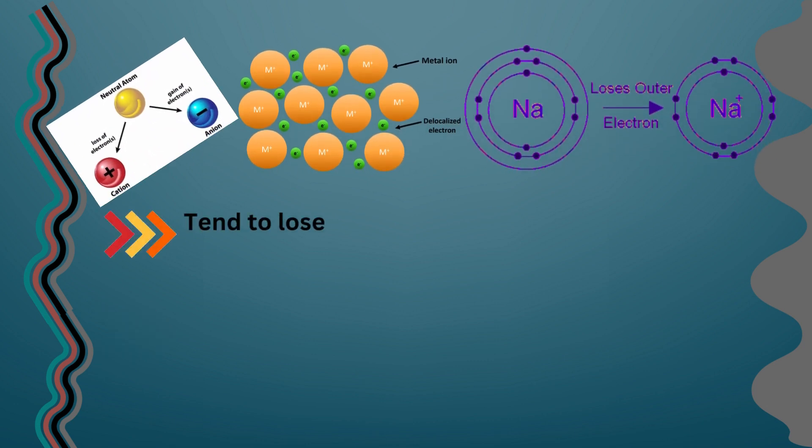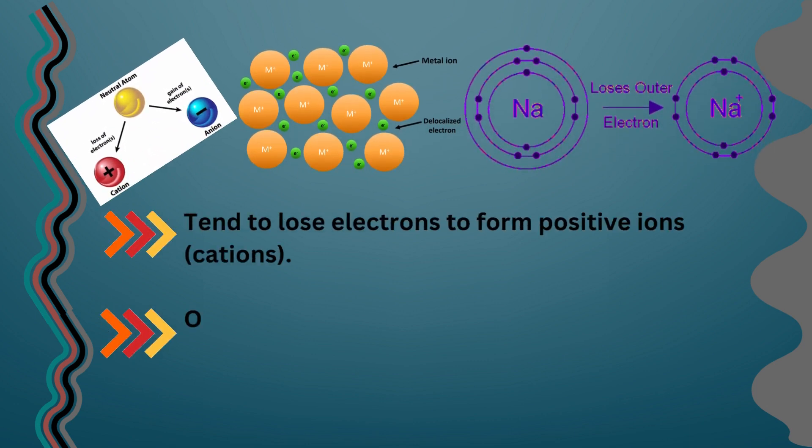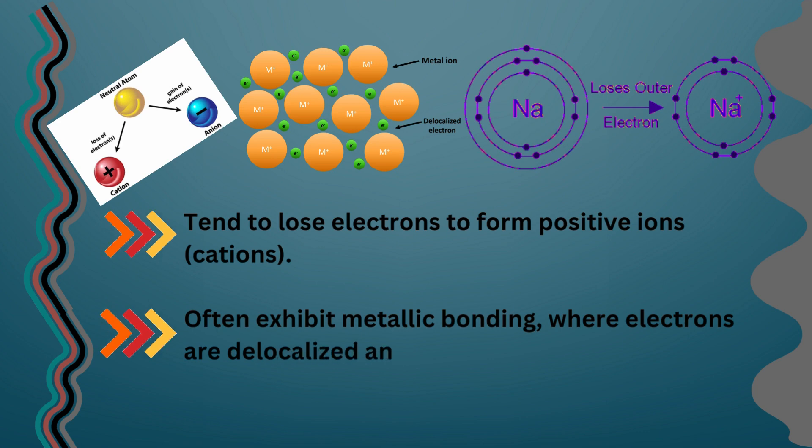Tend to lose electrons to form positive ions, cations. Often exhibit metallic bonding, where electrons are delocalized and move freely between metal atoms.